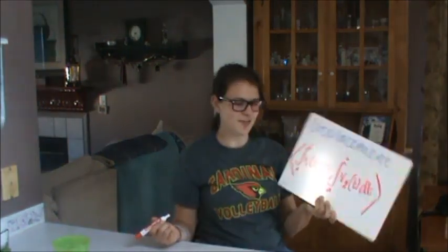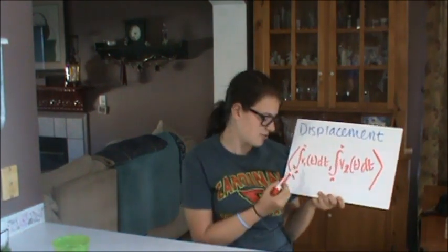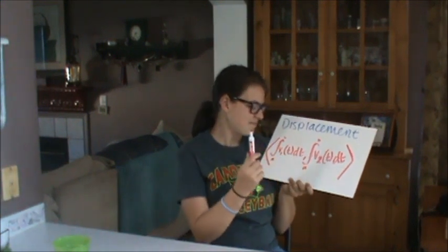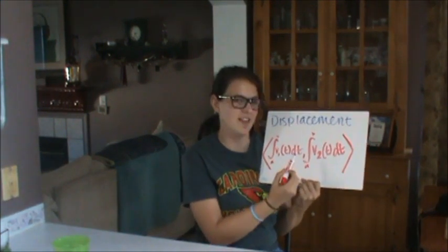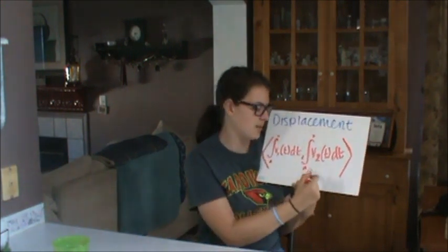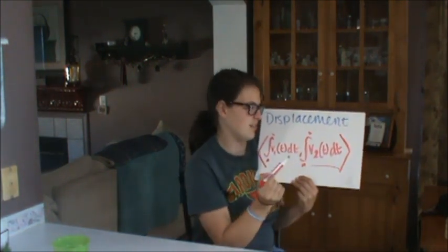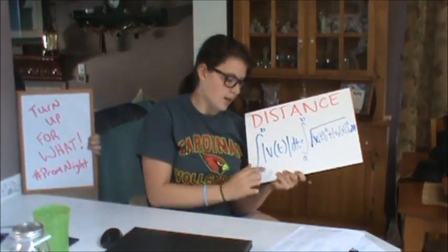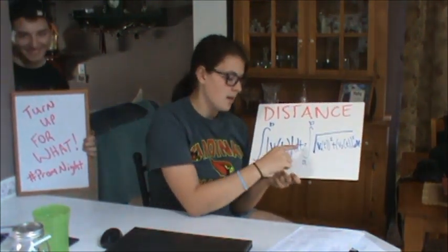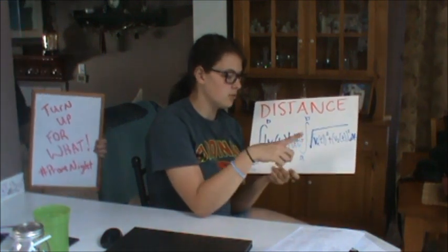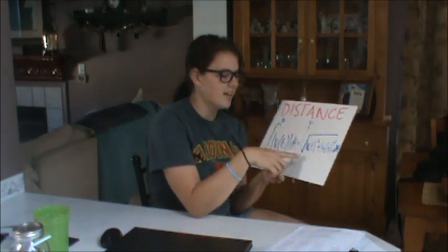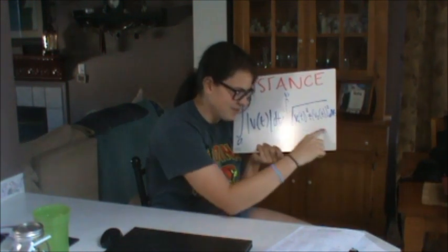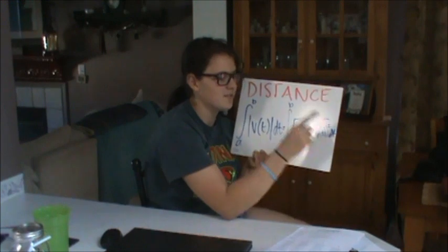I've been trying to figure out displacement, which is the integral from a to b of the first velocity vector, and then the other point in your quadrant is the second velocity vector from the same a to b. The distance of your vector is the integral of a to b of the absolute value of your vector, which equals the integral of a to b of the square root of vector one squared plus vector two squared.